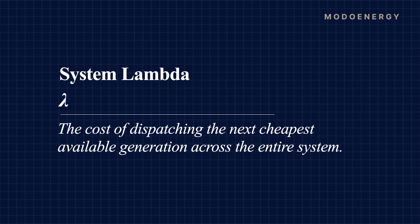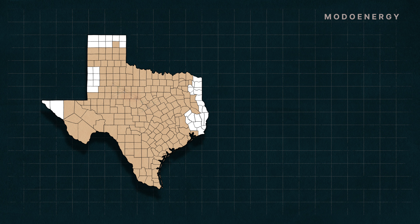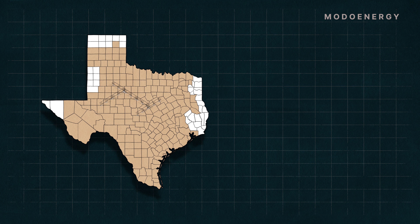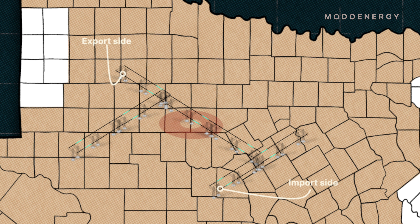However, when there is congestion, ERCOT factors it into every LMP across the system. And here's how. To begin, every congestion constraint has an import side and an export side. The constraint occurs because too much power is flowing from the export side to the import side.